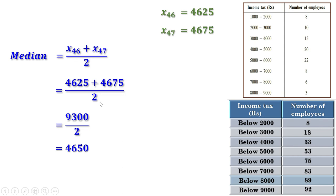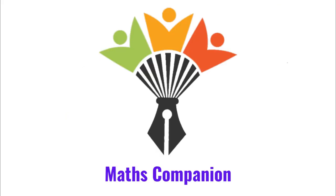We can also think of it another way: take 25 from 4675 and give it to 4625, so both become 4650. Then 4650 plus 4650 divided by 2 is again 4650. Anyway, the median is 4650 rupees. The chapter is complete here. Thank you for your support and motivation. We shall make more videos related to exam and other chapters. Till then, bye.